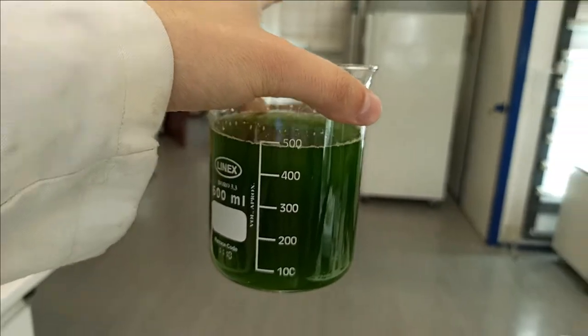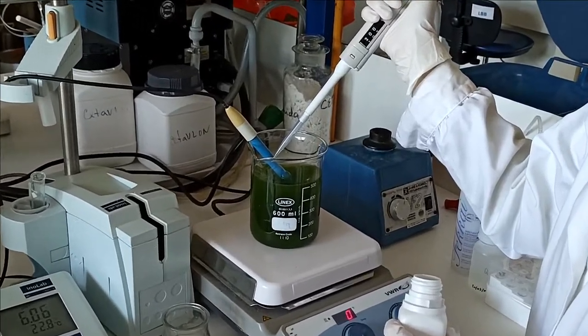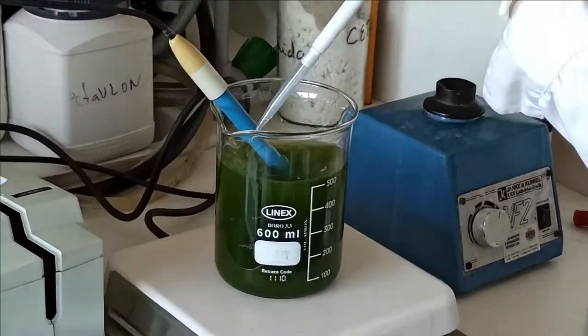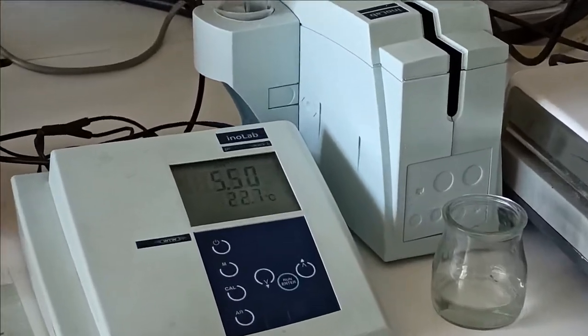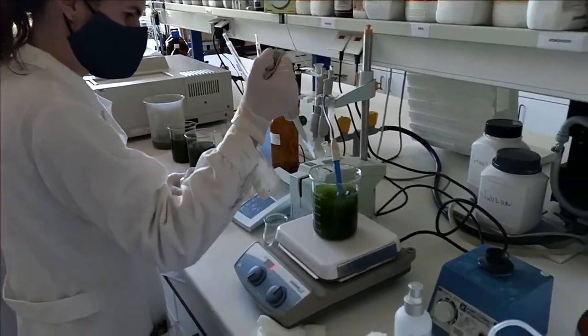So now pick your culture and adjust pH. We have seen that chitosan is more efficient at acidic pH so we set it to 5.5, but be sure to optimize it before.